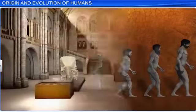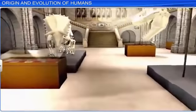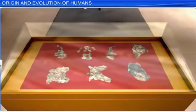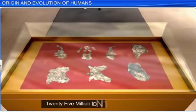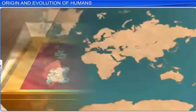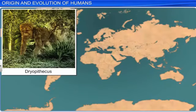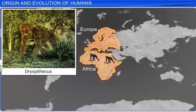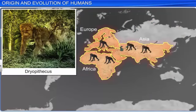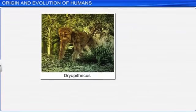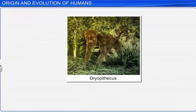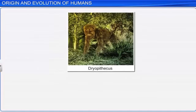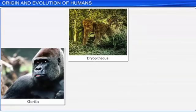The fossil evidence of the upper Miocene epoch of the Cenozoic era shows that around 25 million to 9 million years ago, Dryopithecus, a genus of ape, lived in eastern Africa, Europe, and Asia. The term Dryopithecus means 'the oak tree ape' in Greek. It is representative of the early members of the ape lineage, such as gorillas and chimpanzees. However, it lacked most of the specialized features found in present day human beings and apes.